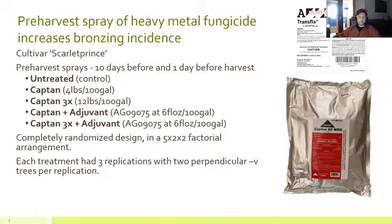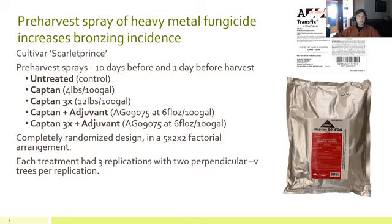For the pre-harvest side of this experiment, we were looking at five different pre-harvest spray treatments on the cultivar Scarlet Prince, which is a mid-season heavy blush variety. Pre-harvest sprays were applied 10 days and one day prior to harvest, applied with a pressurized handgun from a six-pot sprayer until runoff. We had an untreated control; captan at the labeled rate of four pounds per hundred gallons; captan at three times the labeled rate, 12 pounds per hundred gallons; captan with the adjuvant AG09075 (also known as Transfix) at six fluid ounces per 100 gallons; and captan at three times the labeled rate with that same adjuvant. This block was a perpendicular V block. Each treatment had two perpendicular V trees, three replications, in a completely randomized design and a five-by-two-by-two factorial arrangement.